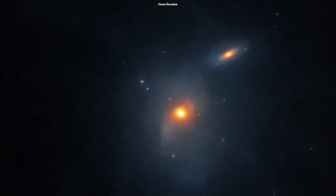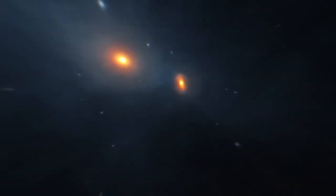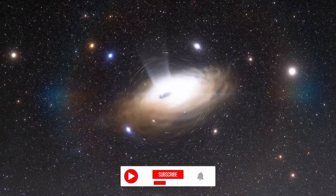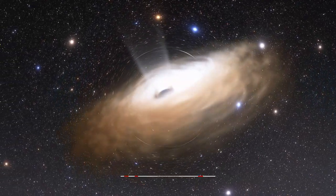We expected just one, but Webb revealed at least three galaxies forming a cosmic knot around this quasar, a super bright region at the center of a galaxy powered by a supermassive black hole.